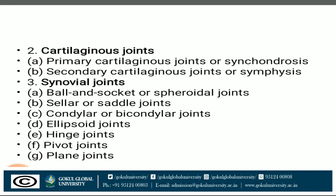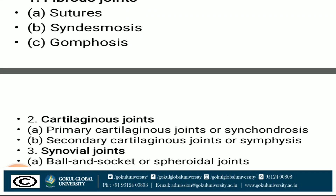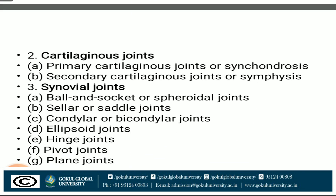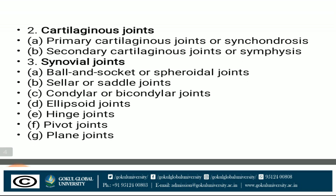In fibrous joints, the further subtypes are suture, syndesmosis, and gomphosis. In cartilaginous joints, there are primary and secondary cartilaginous joints. In synovial joints, subtypes include ball and socket, saddle, condylar, and ellipsoid joints.